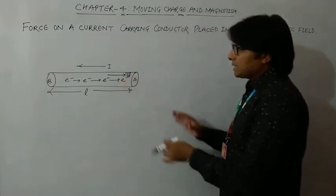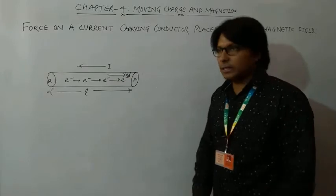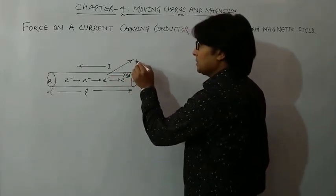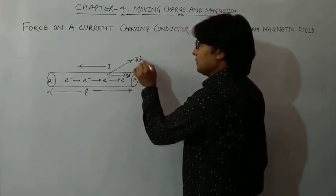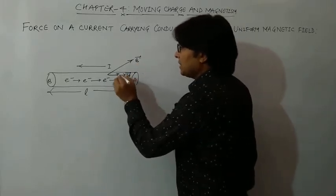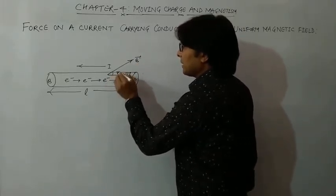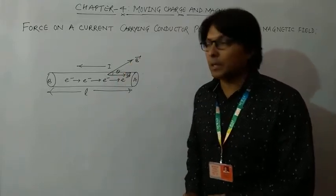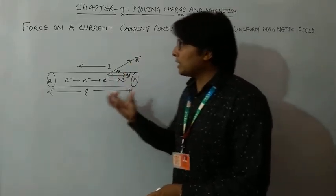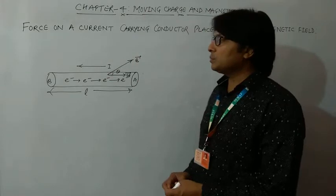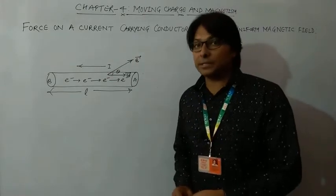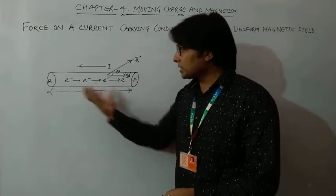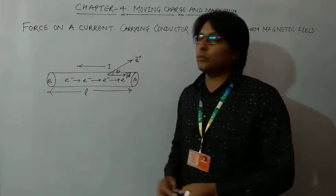This conductor is placed in a magnetic field whose direction is B vector, and the angle between Vd vector and B vector is assumed as theta. We want to derive the formula for how much force will be exerted on this conductor of length L.